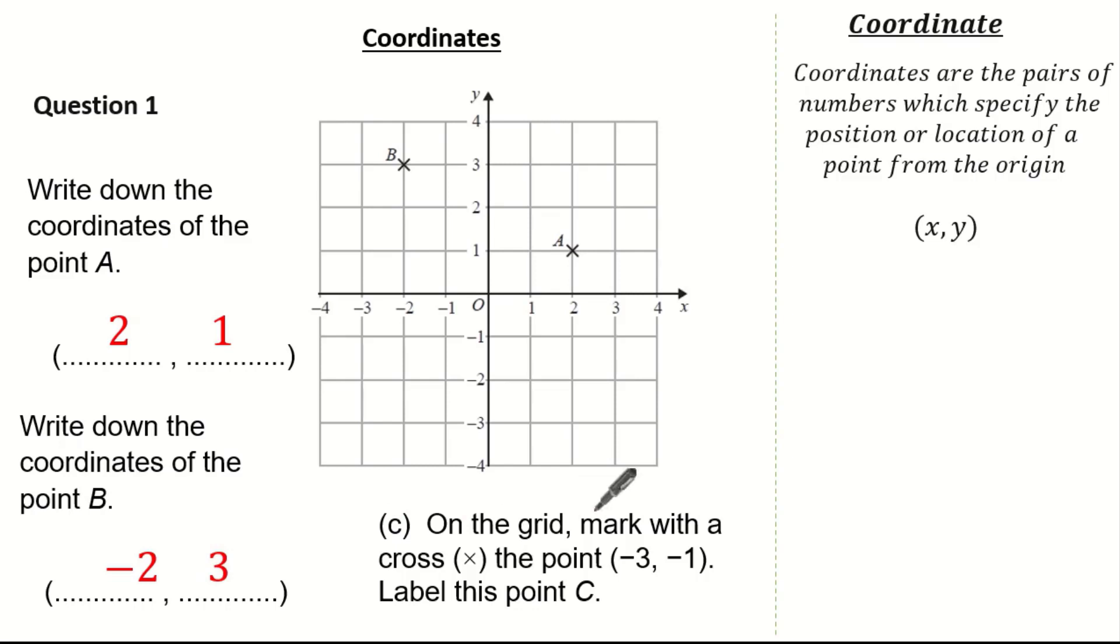Next the question wants us to plot the coordinate minus 3, minus 1. Well, remember start from the origin. We go across to minus 3 and down to minus 1 so this is my point c.